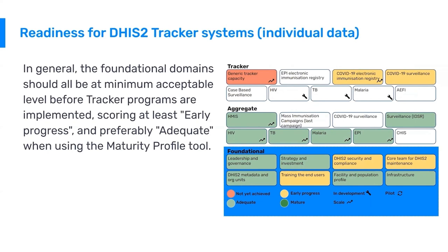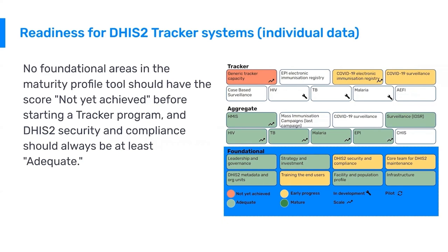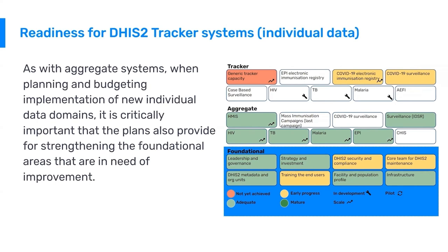In general, we strongly recommend that foundational domains are at an acceptable level before tracker programs are implemented — they should score at least early progress, meaning yellow, and preferably adequate when using the maturity profile tool. There should be no 'not yet achieved' scores before starting a tracker program, and security and compliance should always be at an adequate level. When planning and budgeting for new individual data domains, it's critically important that the plans also provide for strengthening the foundational areas that are in need of improvement — not only the cost of configuring the tracker, but also activities related to foundational issues to ensure the system is successful over time.